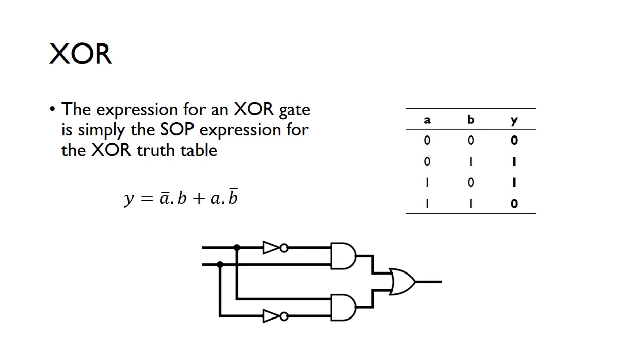So for an XOR gate, we've got the truth table here, and we can see we've got to write out the SOP expression for the XOR truth table. So for the SOP expression, we just look in the outputs every time the output is a 1, we just get that particular minterm.